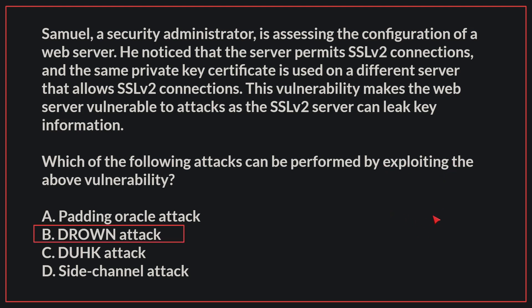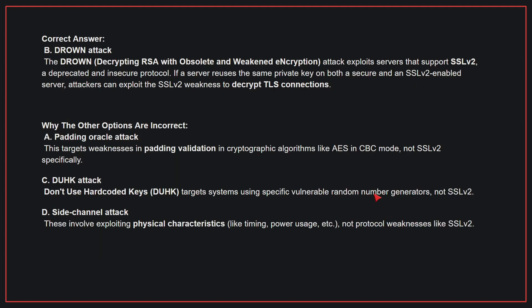The correct answer is B: Drown attack. The Drown attack exploits servers that support SSL v2, a deprecated and insecure protocol. If a server reuses the same private key on both a secure and an SSL v2-enabled server, attackers can exploit the SSL v2 weakness to decrypt TLS connections.